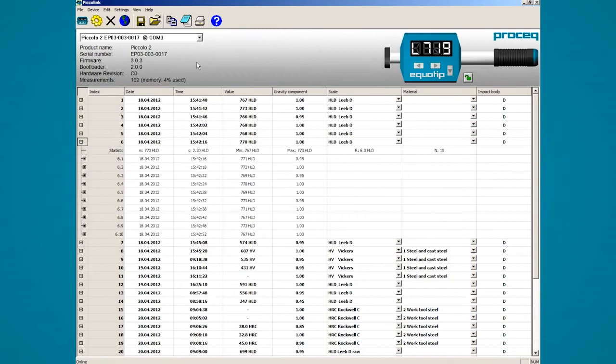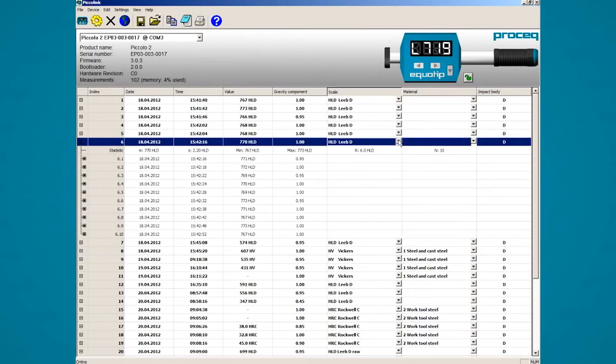Most of the functions like save, open and print work the same way as with any other program. Picolink also allows you to easily convert your test results to other hardness scales. Data can be exported by using copy or export.